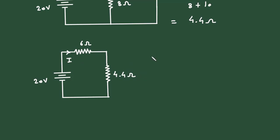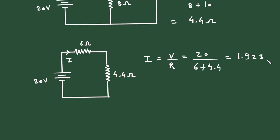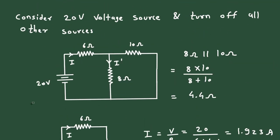Now we can easily find the value of current I. I is equal to V upon R. The voltage is 20 and the resistance is 6 plus 4.4, so I = 20 divided by 6 + 4.4, which gives 1.923 ampere. But we still need to find the value of I prime.